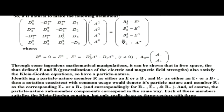Through some ingenious mathematical manipulations, it can be shown that in free space, the thus defined E and B generalizations of the electric and magnetic field strengths also satisfy the Klein-Gordon equations, so have a particle nature.